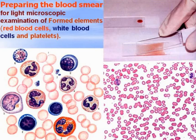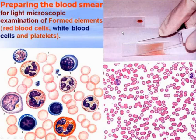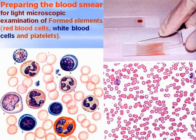In histology we will study the microscopic structure of blood, in particular the formed elements. To study the microscopic structure of formed elements it is necessary to prepare the blood smear: take a small drop of blood from the fingertip, place it on the glass, and using another glass prepare the thin smear.